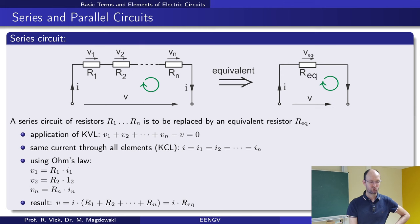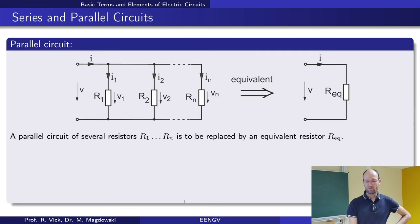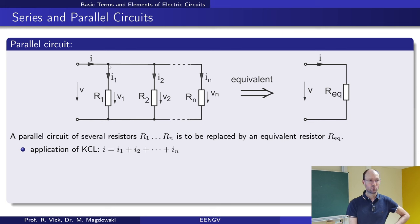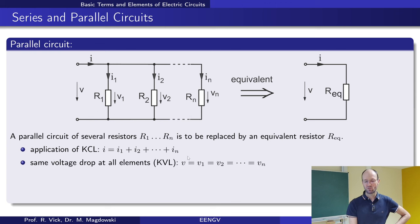Now for a parallel connection — one resistor, a second resistor, maybe more, all connected in parallel. For the top node, which is essentially one node, we write Kirchhoff's current law: the total current going in is the sum of the individual currents through each resistor. Kirchhoff's voltage law tells us the voltage drop across all these resistors is equal — the same voltage everywhere.